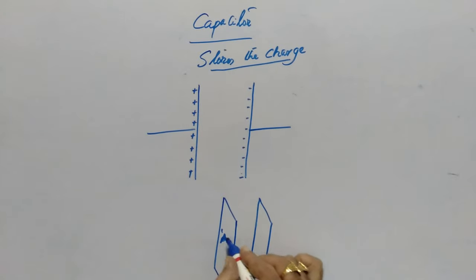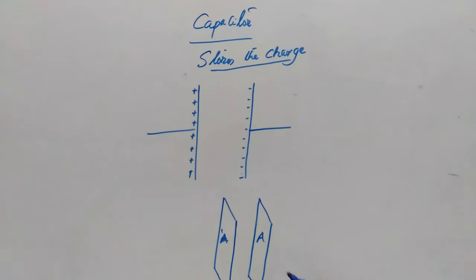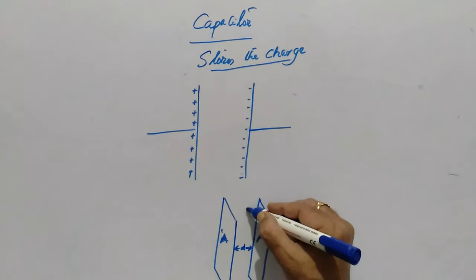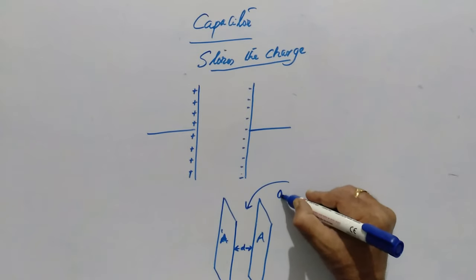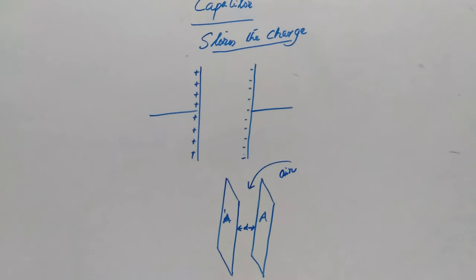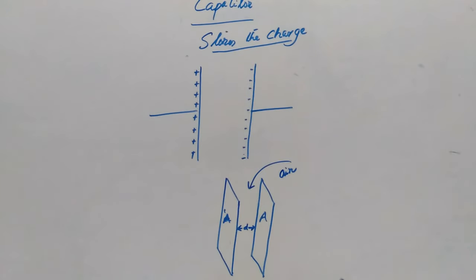Consider the area of these plates to be A, and they will be kept a distance D apart. Initially we consider that air or vacuum is the insulator. Our aim is to calculate the capacitance of this parallel plate capacitor.